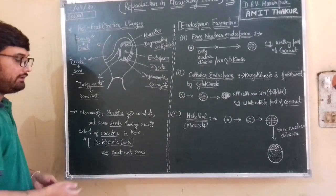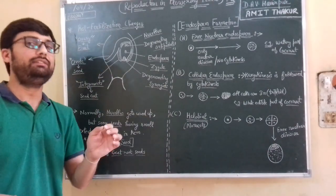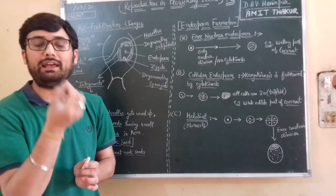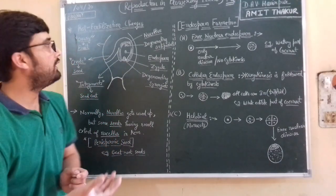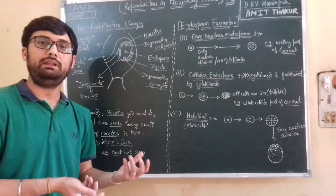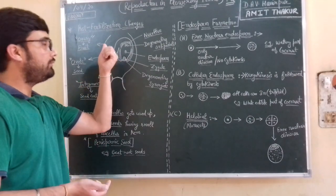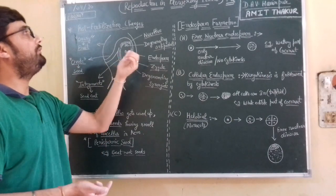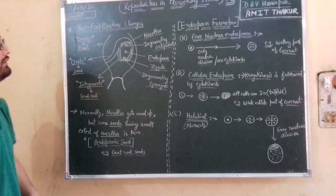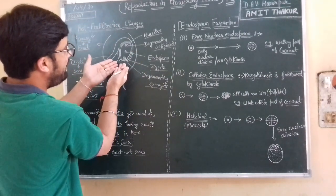Some seeds are called perispermic seeds — for example, in beetroot, those seeds are perispermic seeds. What does this mean? These seeds do have nucellus, a cell mass, after post-fertilization. Normally you will not get nucellus after fertilization in ovules, but in a few plants it will retain nucellus even after fertilization. So what do we call such seeds? Perispermic seeds, like in beetroot.